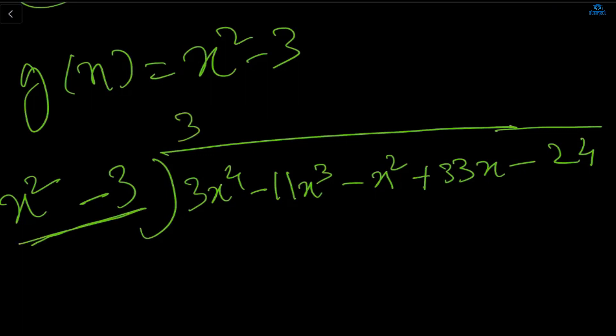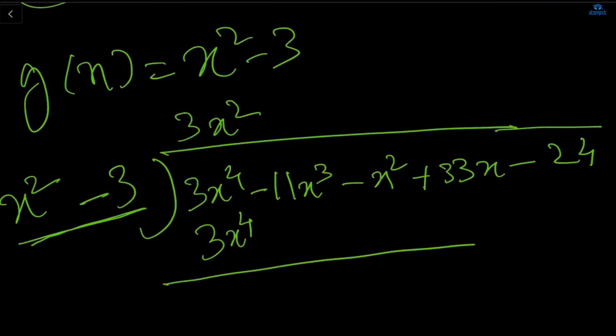We multiply 3x² by x², getting 3x⁴, then by -3 getting -9x², and we alter the sign so both these terms cancel with the polynomial.